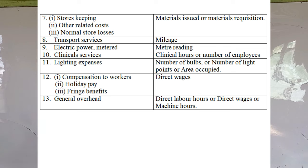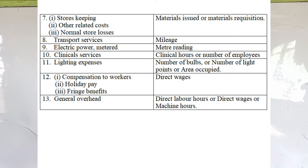For clinical services, use either clinical hours or number of employees — whichever is most appropriate for the question. For lighting expenses, use number of bulbs, number of light points, or floor area occupied. For compensation to workers, holiday pay, or fringe benefits, use direct wages or number of employees. For general overheads, use direct labour hours, direct wages, or machine hours. These are examples of overheads and their bases for apportionment.